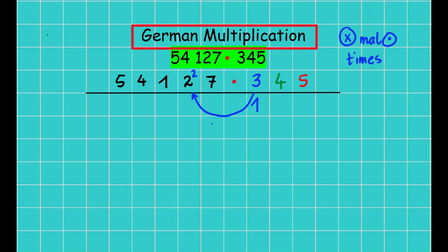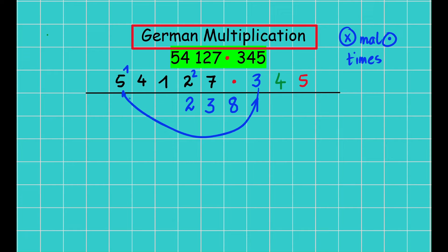Now three times two is six, plus the carried two is eight, so I write eight in this box. Then three times one is three, so I write three here. Three times four is twelve, so I write two here and carry one. Then three times five is fifteen, plus one carried is sixteen, so I write six here and one here. We are finished with three.